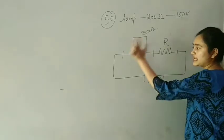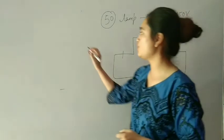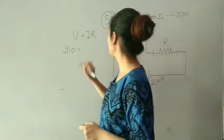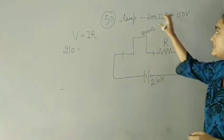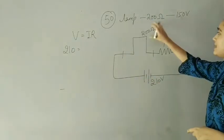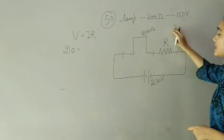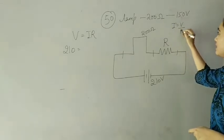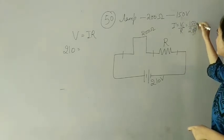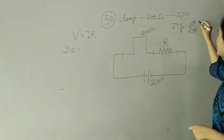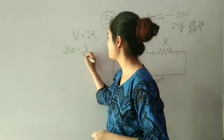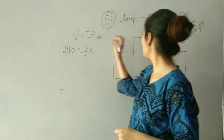The total voltage is 210 volt. The lamp current is 150 divided by 200, which equals 3 by 4 ampere. So 3 by 4 into R plus 200 gives us the series resistance value.